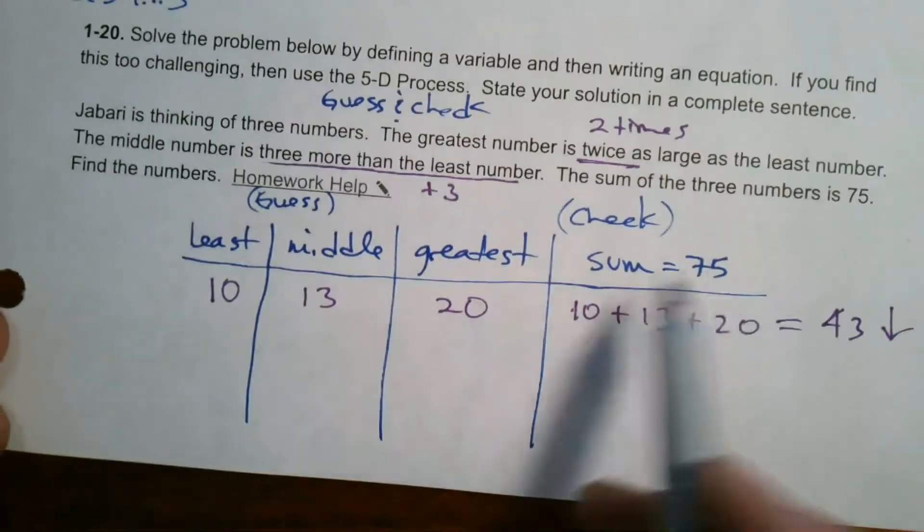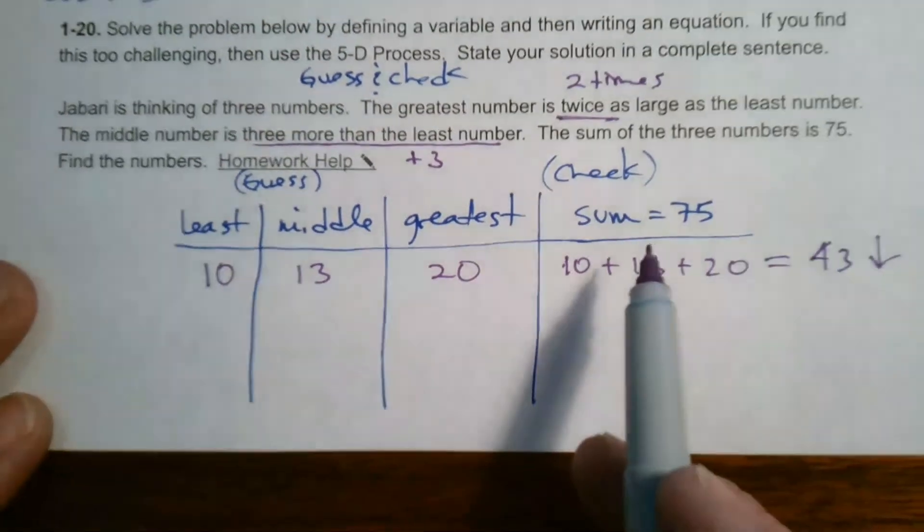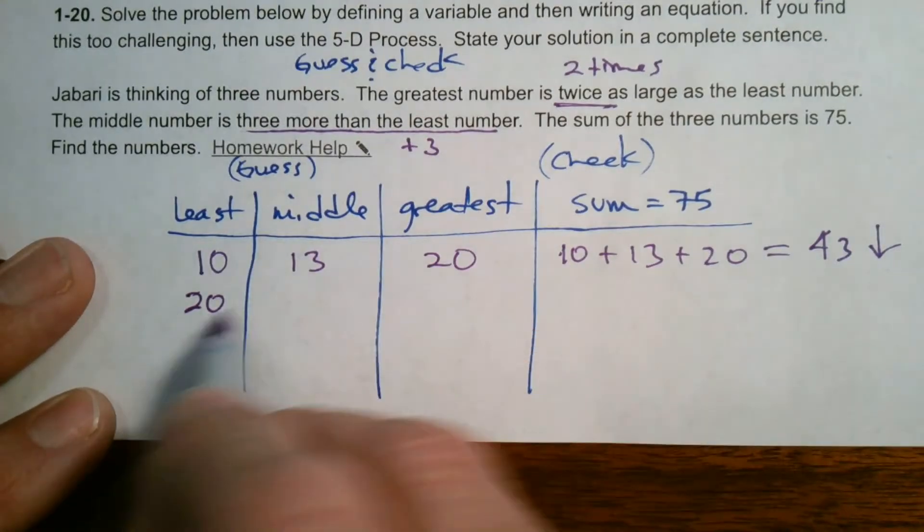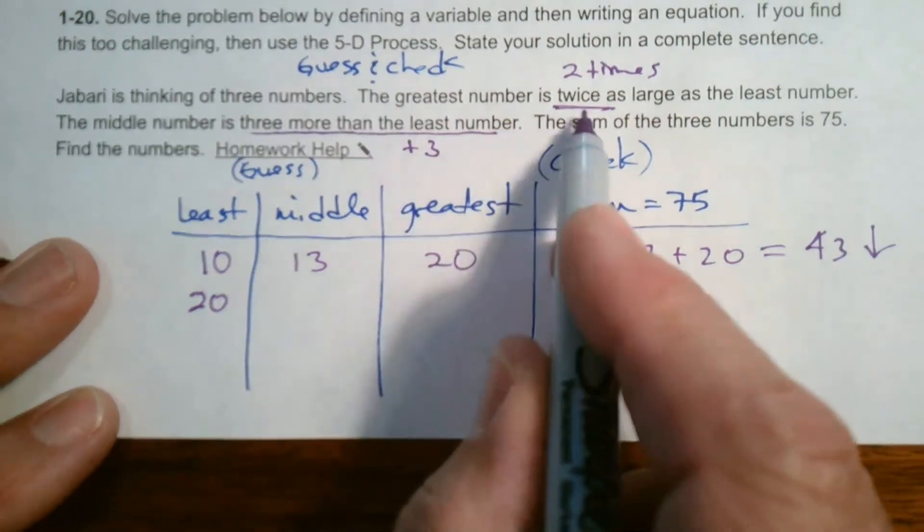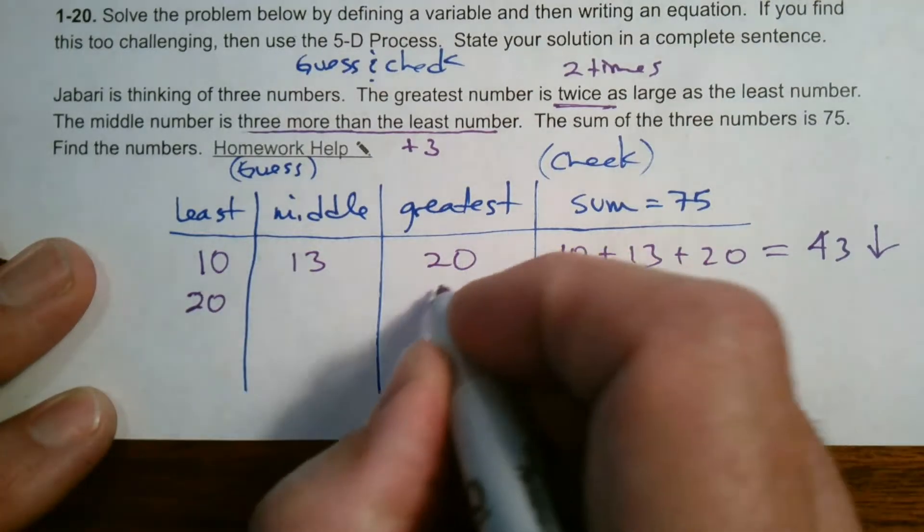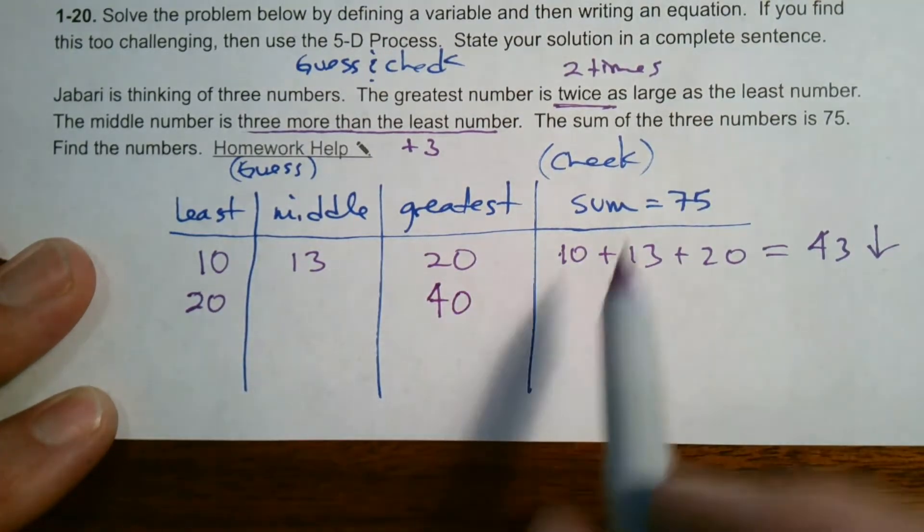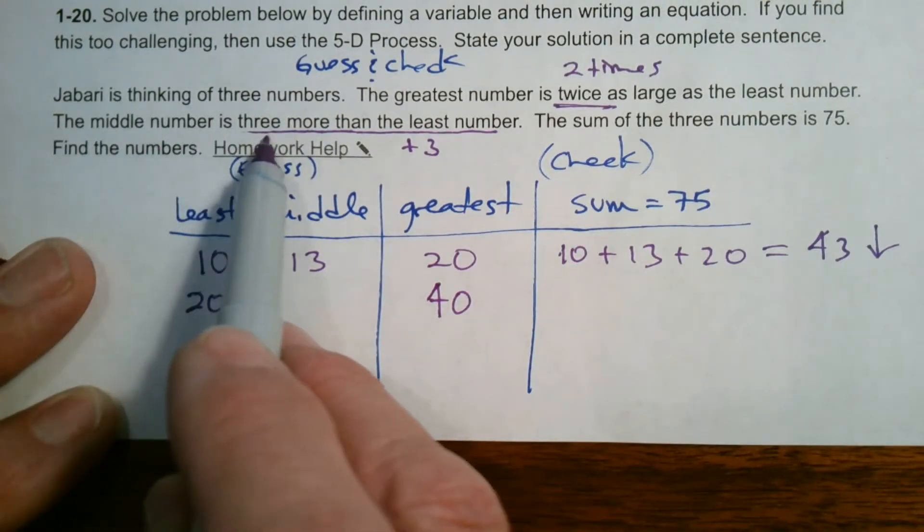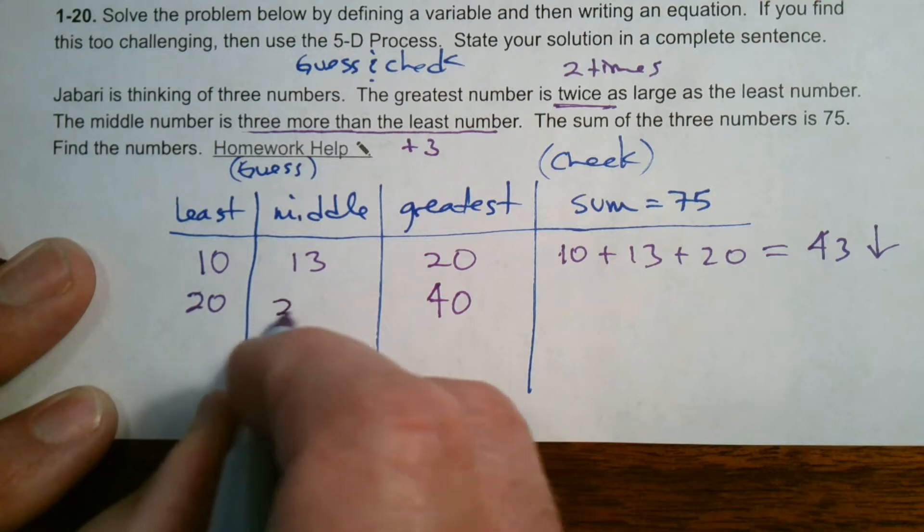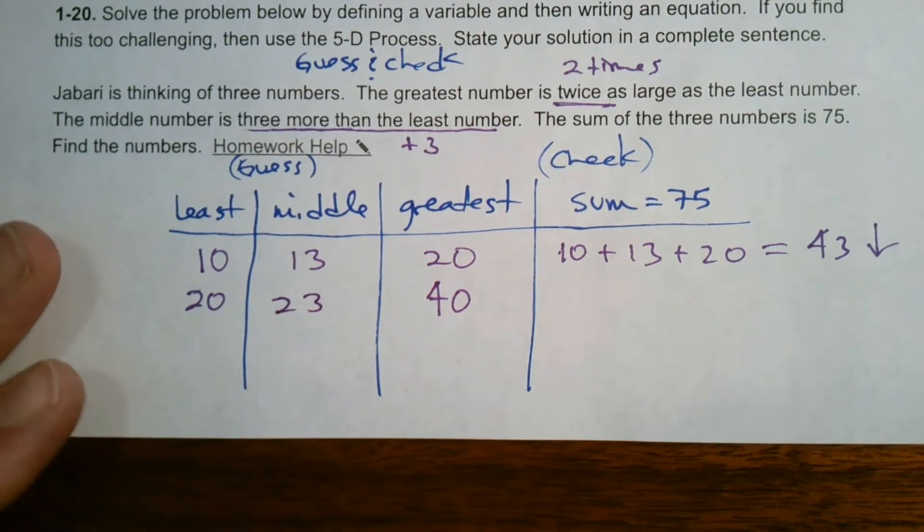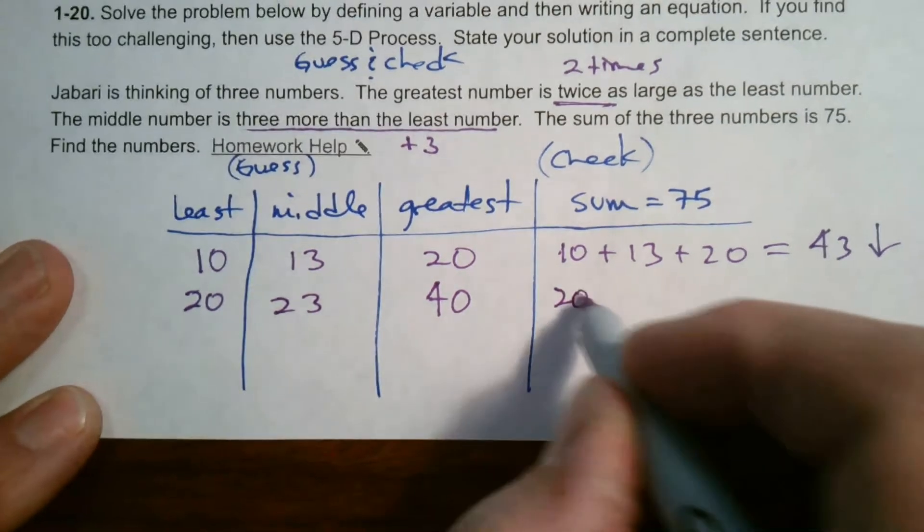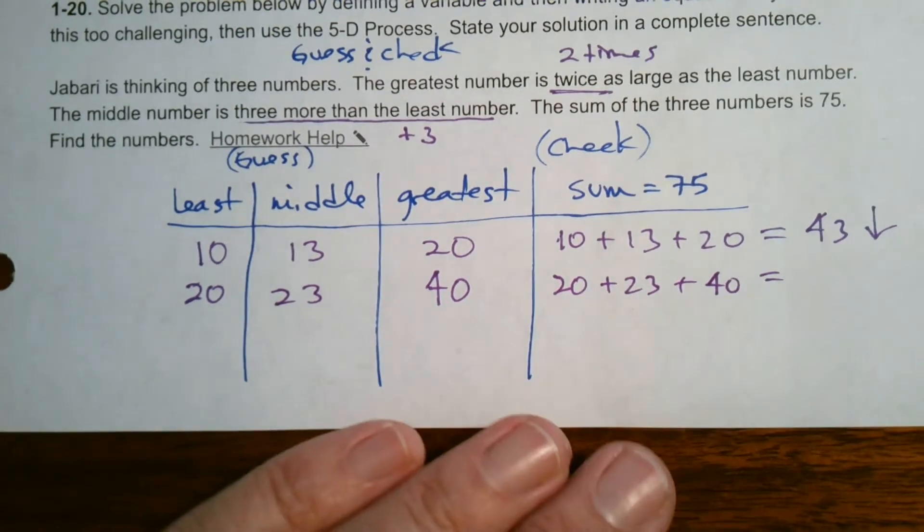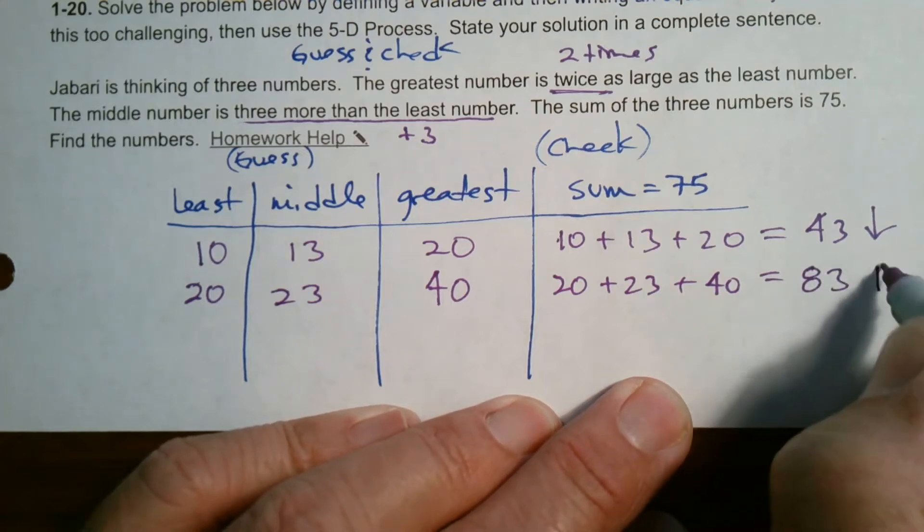I need to guess higher since I needed 75. Let's try 20. Twice of 20 is 40 for the greatest. The middle is three more than the least, so 23. Adding them up: 20 plus 23 plus 40 equals 83. Now I'm too high.